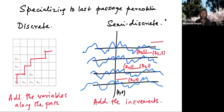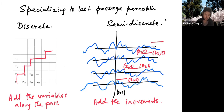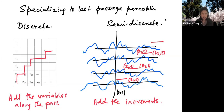Let's dive into the model in question. I'll talk about last passage percolation and introduce two different setups. First, the discrete version where you have the Z^2 lattice. For every vertex in the lattice, there is some IID random variable. You take oriented paths between any two points in the lattice which admit oriented paths within them, and for each such path, the weight of the path is simply the sum of the variables along that path.